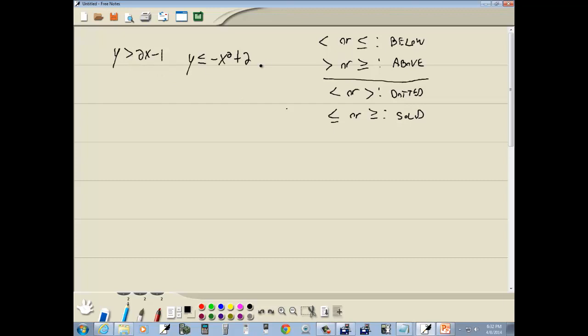So come over here. This one's a greater than. Greater than says above, so this one's above. And a greater than says it's going to have a dotted line.